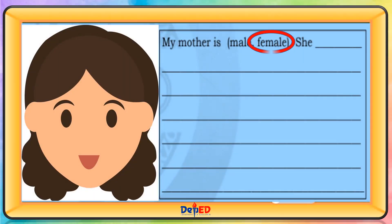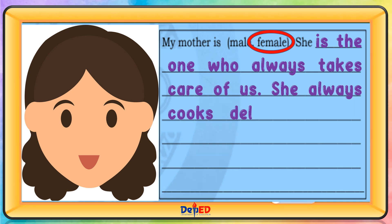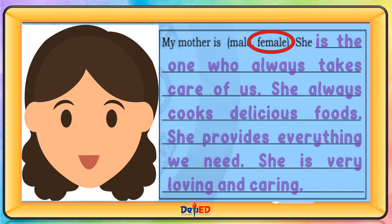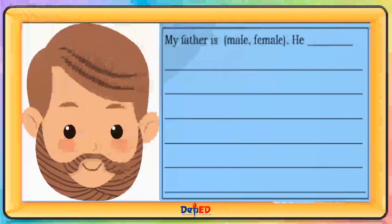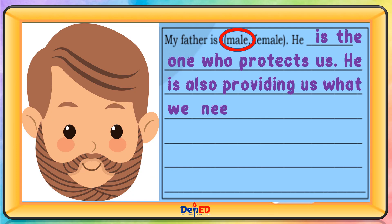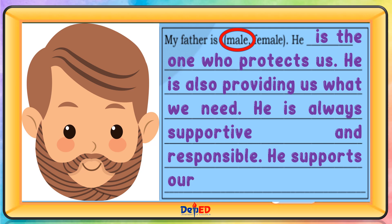My mother is female. She is the one who always takes care of us. She always cooks delicious foods. She provides everything we need. She is very loving and caring. My father is male. He is the one who protects us. He is also providing us what we need. He is always supportive and responsible. He supports our daily needs.